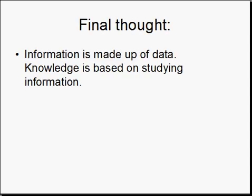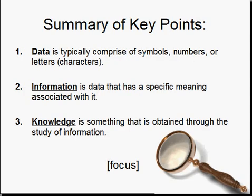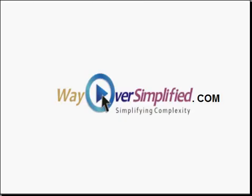A final thought: Information is made up of data. Knowledge is based on studying the information. Summary of key points: Data is typically comprised of symbols, numbers, letters, or characters. Information is data that has a specific meaning associated with it. Knowledge is something that is obtained through the study of information. Way over simplified.